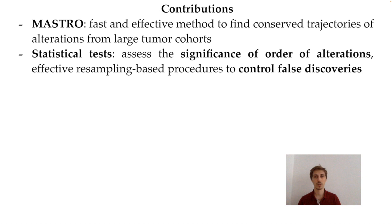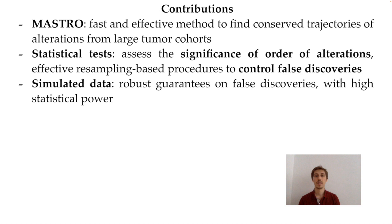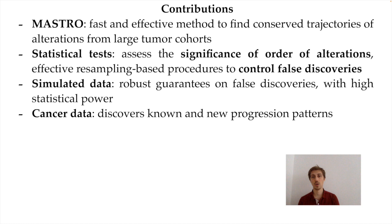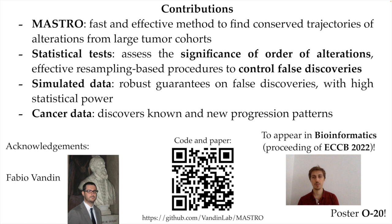To conclude, MASTRO is a fast and effective method to find conserved trajectories of alterations from large tumor cohorts. It is based on new statistical tests to assess the significance of the order of alterations and effective procedures to control false discoveries. In simulations shown in the paper, MASTRO is robust against false discoveries while achieving high statistical power, and on cancer data it discovers both known and new progression patterns. The implementation is available online, and the paper will soon appear in Bioinformatics as part of the proceedings of ECCB 2022. Thank you and goodbye.